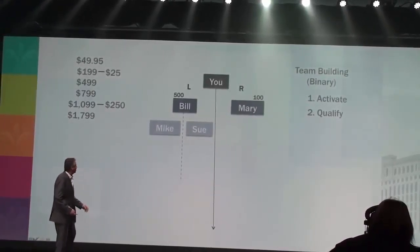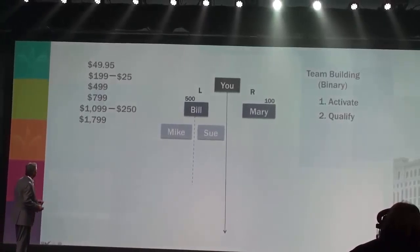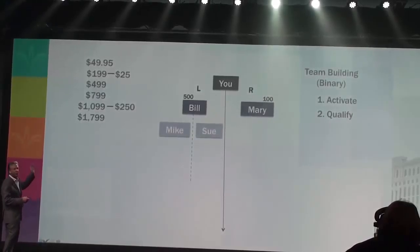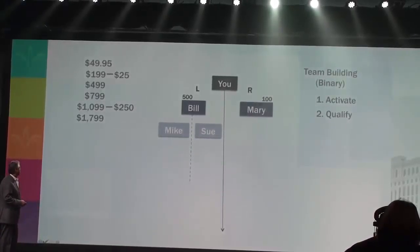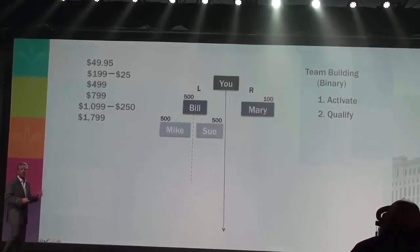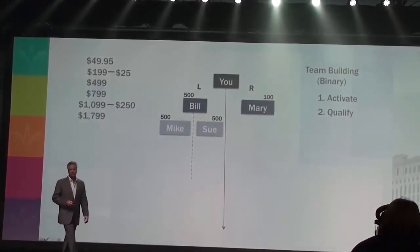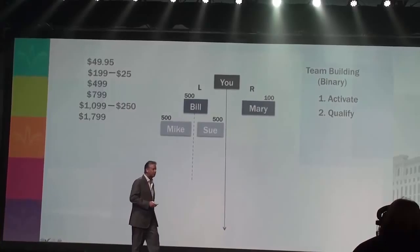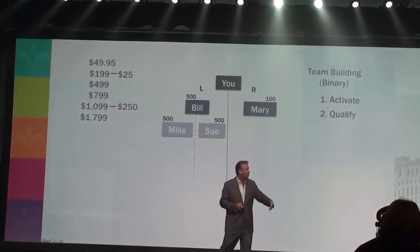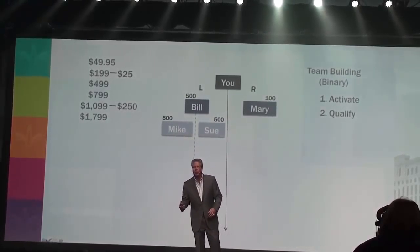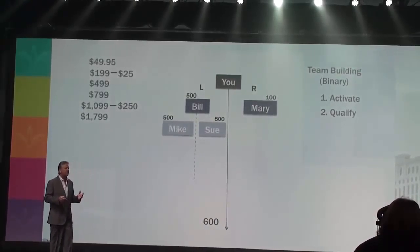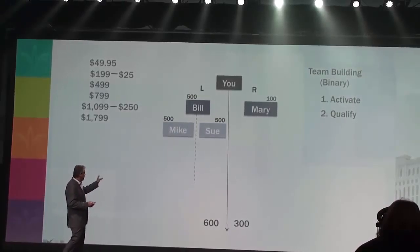Mike and Sue have to activate. They both order the Ambassador Pack for $1,099. Bill makes $250 times two, or $500. And 500 points goes into the plan for each one of those orders. Here's how this team building thing works: the computer in real time is adding up all the points being generated by your left team and all the points generated by your right team. When the computer sees 600 points on your left team and 300 points on your right team, you get a $35 cycle bonus.